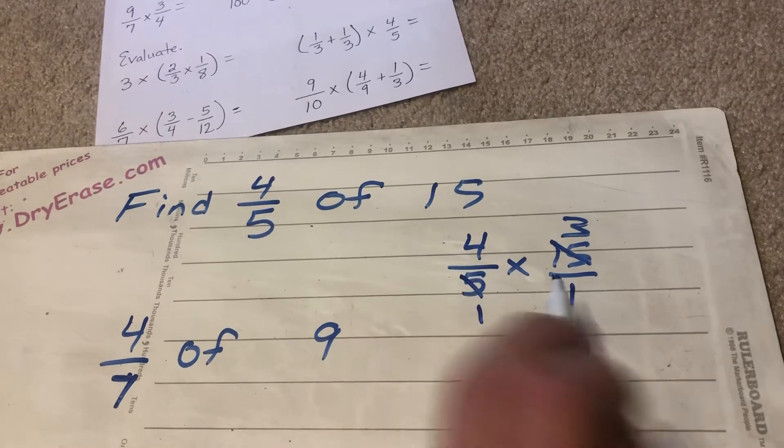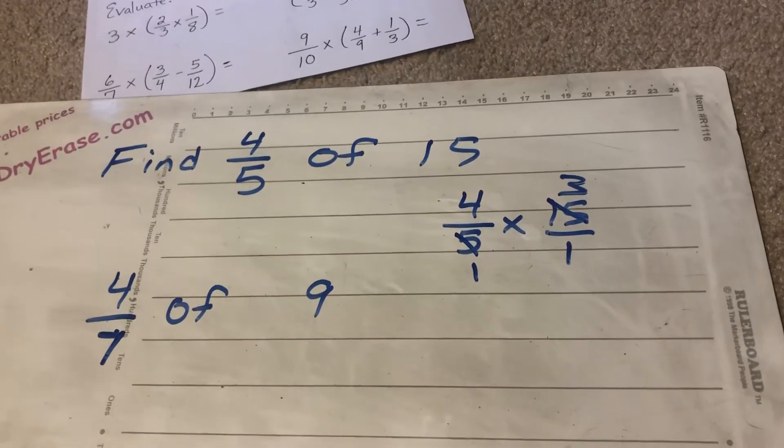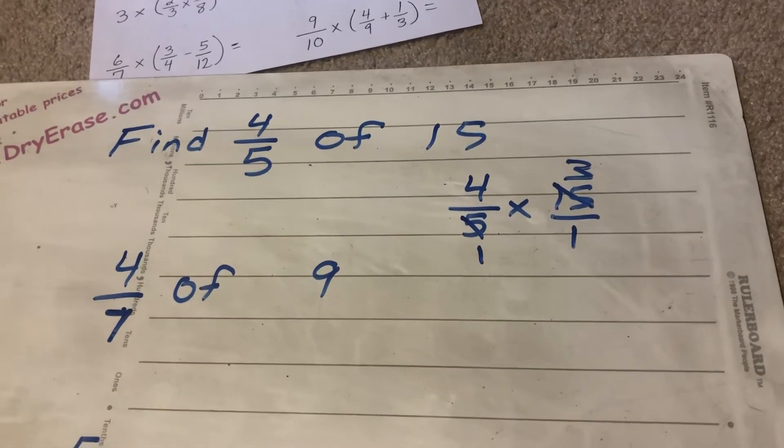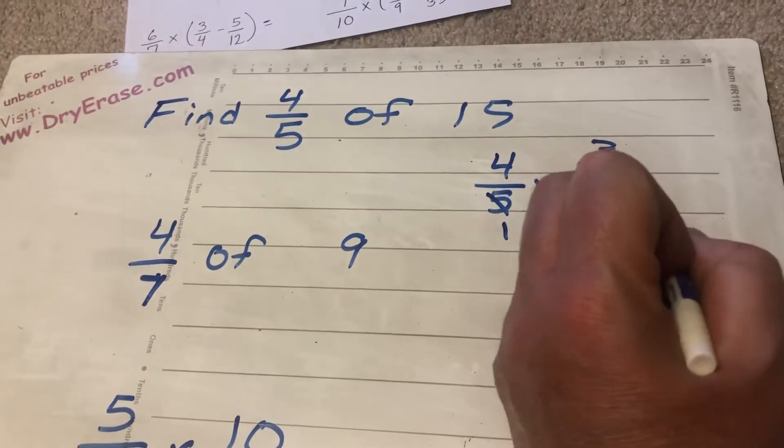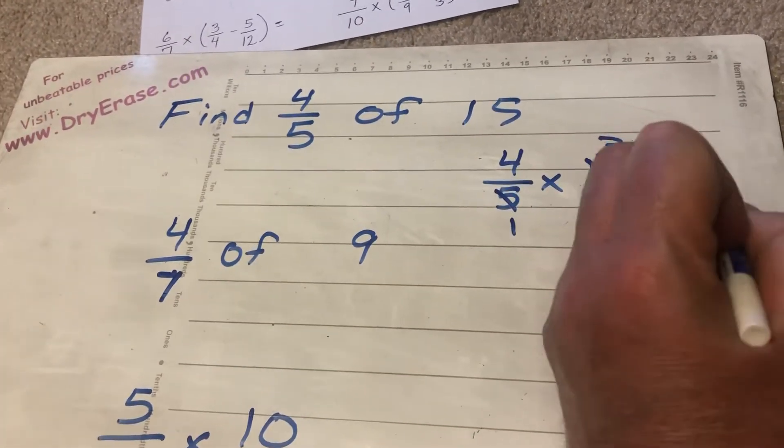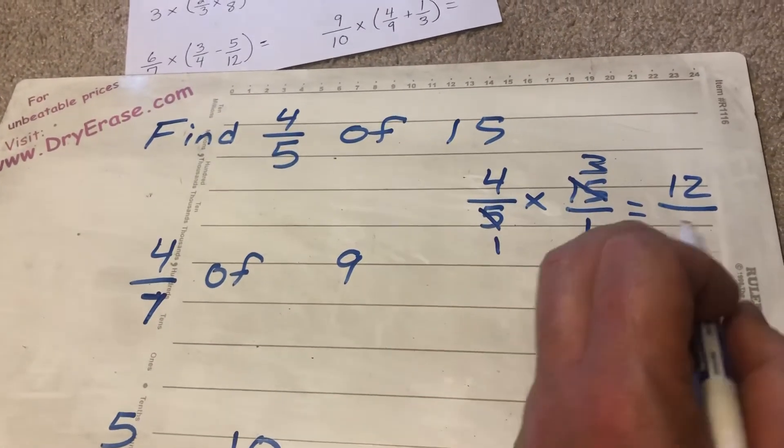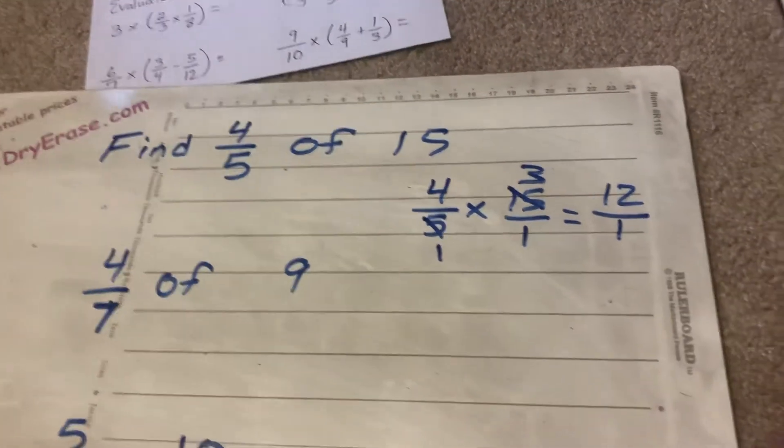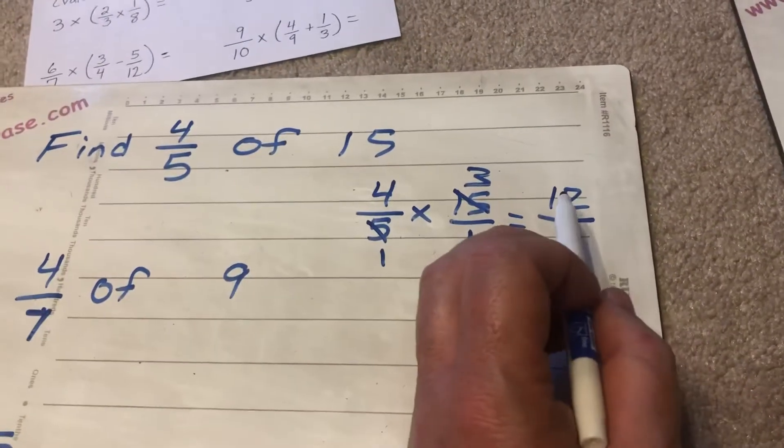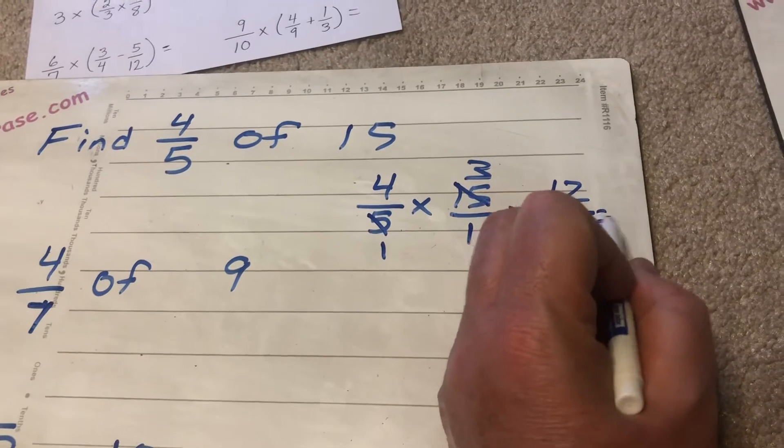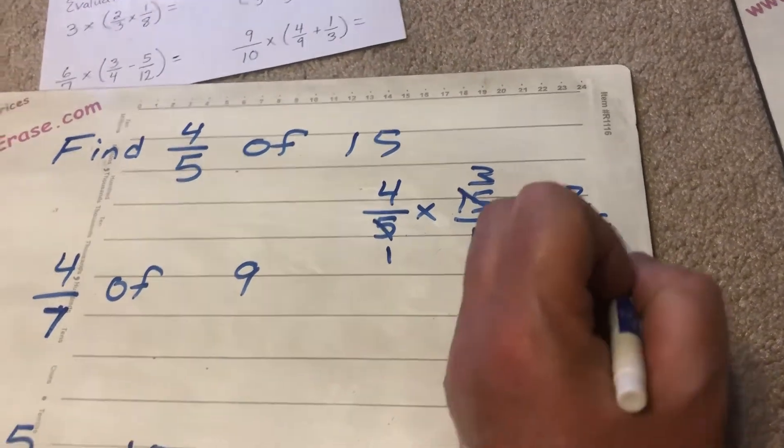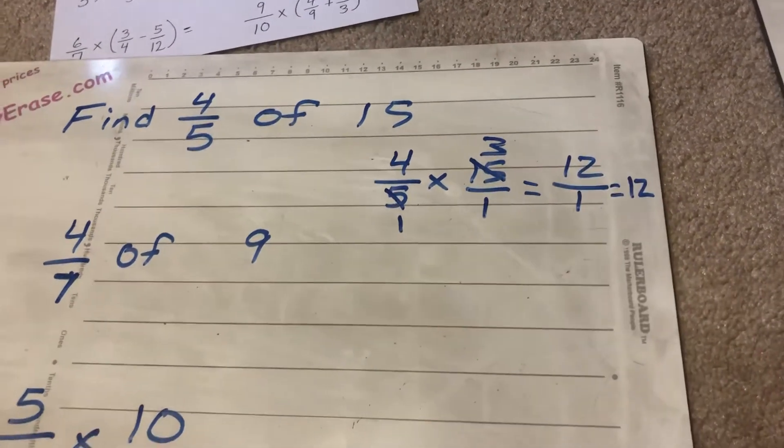I can't cross-check a 4 and a 1. Nothing can go into both 4 and 1 except 1. So I go ahead, 4 times 3 is 12. 1 times 1 is 1. That leaves me with 12 over 1, or remember a fraction is just a fancy way of writing a division problem. 12 divided by 1 is 12.